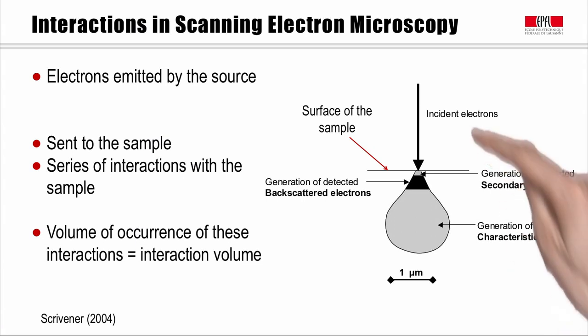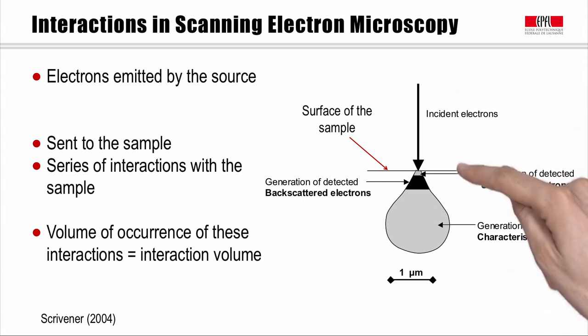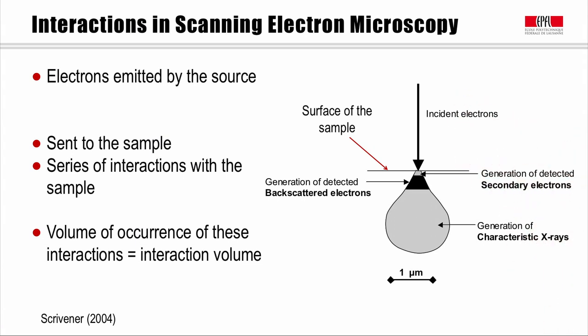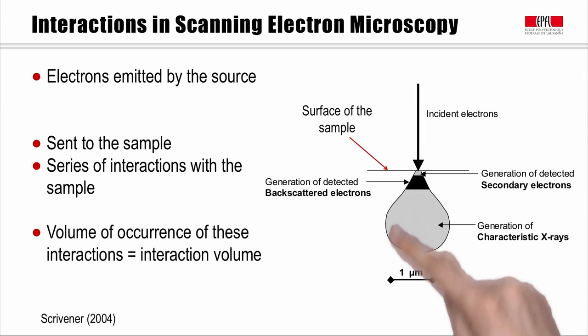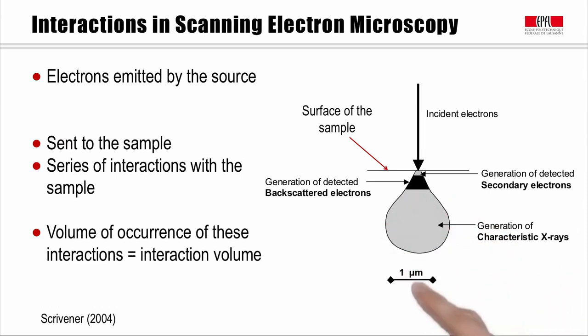An incident electron, as you can see here, faces a series of interactions before its energy is fully dissipated. All these interactions between the incident electron and the electrons of the sample do not occur exactly at the entering point of the electrons, but they occur in a more global volume, which is called the interaction volume.